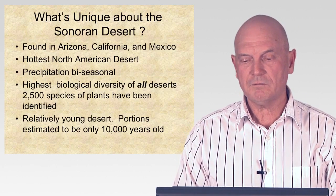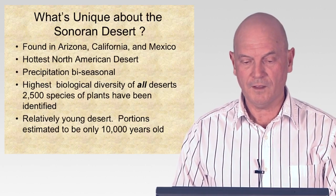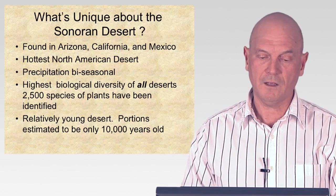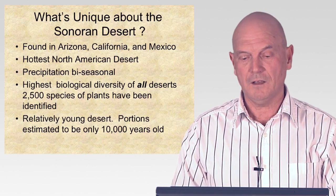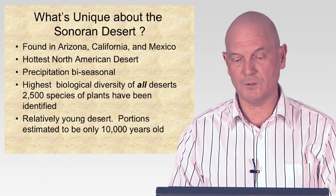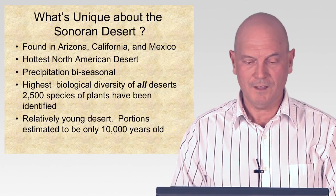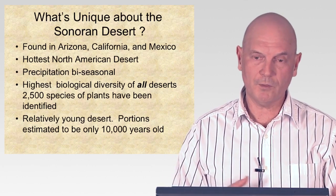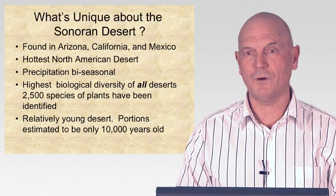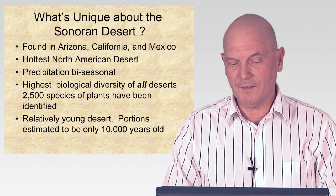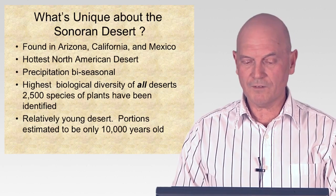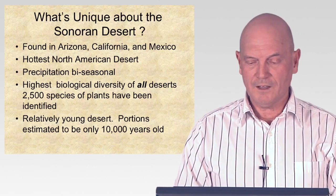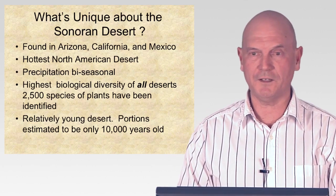The Sonoran Desert is found in Arizona, New Mexico, and California. It's the hottest of the North American deserts. Precipitation is bi-seasonal, which is unique — we get a monsoon or summer rainy season and another rainy season during winter. That bi-seasonal precipitation causes more diversity in plants because some favor winter moisture and some favor summer moisture, potentially doubling the variety of plants. It also has the highest biological diversity of all the deserts, with 2,500 species of plants identified.